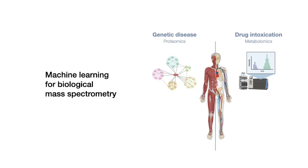Today I'd like to tell you two different stories about how I've applied machine learning to large-scale biological datasets generated using mass spectrometry to help understand and diagnose human disease. I'll tell you first about using proteomics to understand the molecular basis of inherited disease, and then about using metabolomics to diagnose acute drug intoxication.